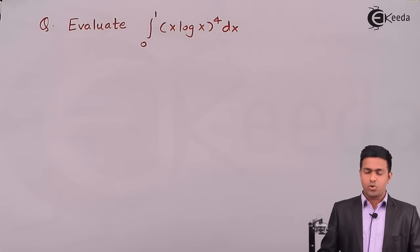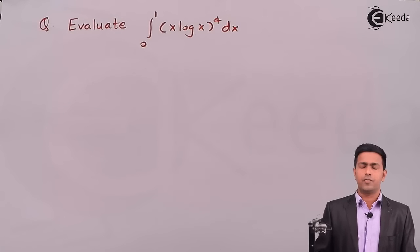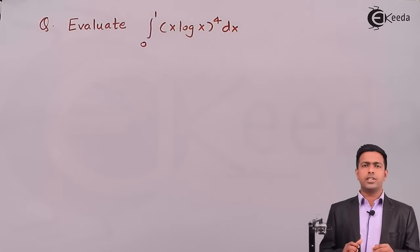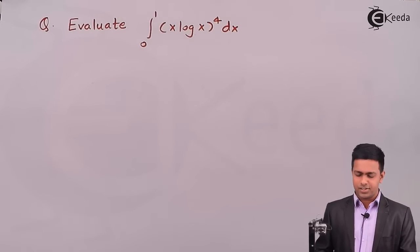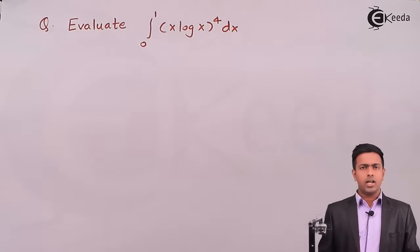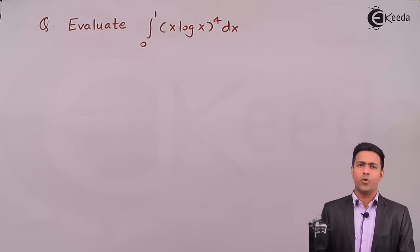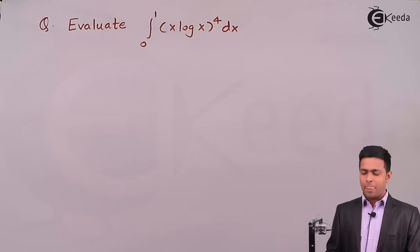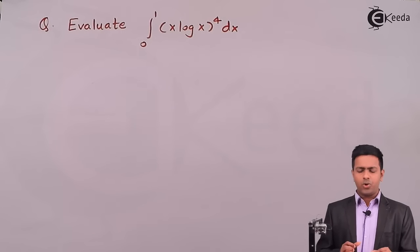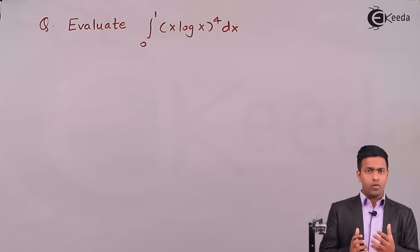Hello friends, here we are going to learn the numerical based on gamma function and we will solve it using the properties and the definition of gamma function. For that we have the integration from 0 to 1 of x·log(x) whole bracket raised to 4, dx. Now how to evaluate this integral?